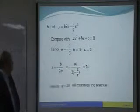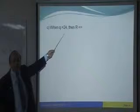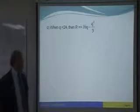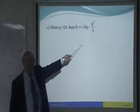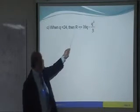So, your answer will be part C. When Q equals to 24, then revenue you substitute into this function. We got from part A just now. So, substitute Q with 24.